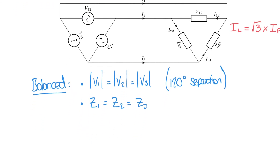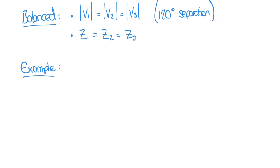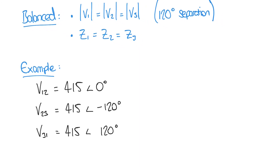Let's begin an example. We have three line voltages — measured from line to line — V1,2, V2,3, and so forth. We have voltages of 415 volts at angles of 0 degrees, minus 120 degrees, and plus 120 degrees. These are our line voltages in this particular network.